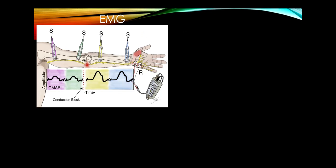On EMG, we stimulate the nerve at different places. Stimulating below and above a conduction block — such as from elbow resting on the ulnar nerve — produces a drop in the compound muscle action potential (CMAP). That is what a conduction block looks like.